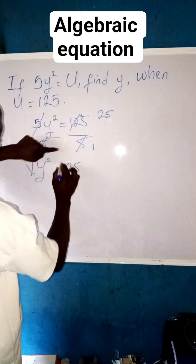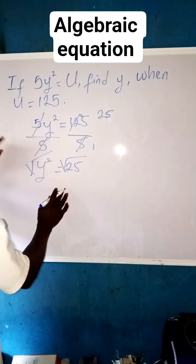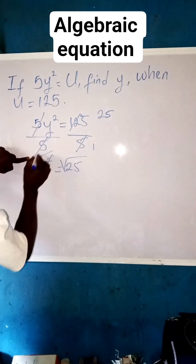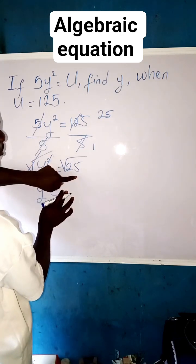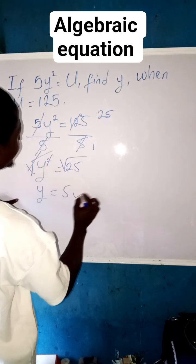So square root both sides so that we can get the value of y to be free. We strike out this square. We are now left with y equals to square root of 25 is 5. So this is our final answer for y.